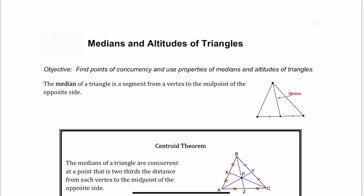Today we're looking at medians and altitudes of triangles. These are also points of concurrency. Remember we talked about concurrency in our last video. Concurrency is when you have three lines and they all intersect in the same point, and the point where they all intersect is called the point of concurrency.